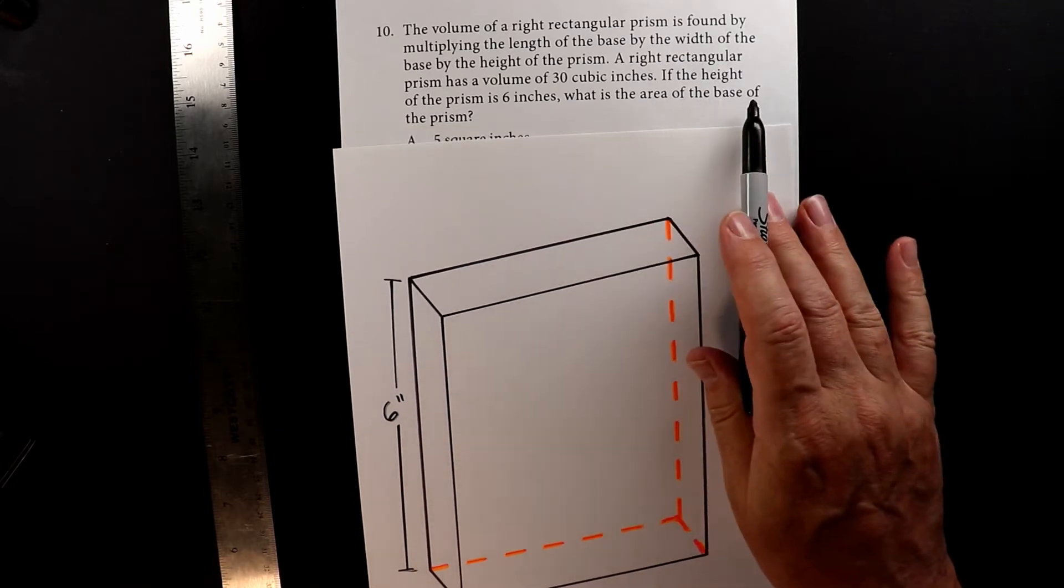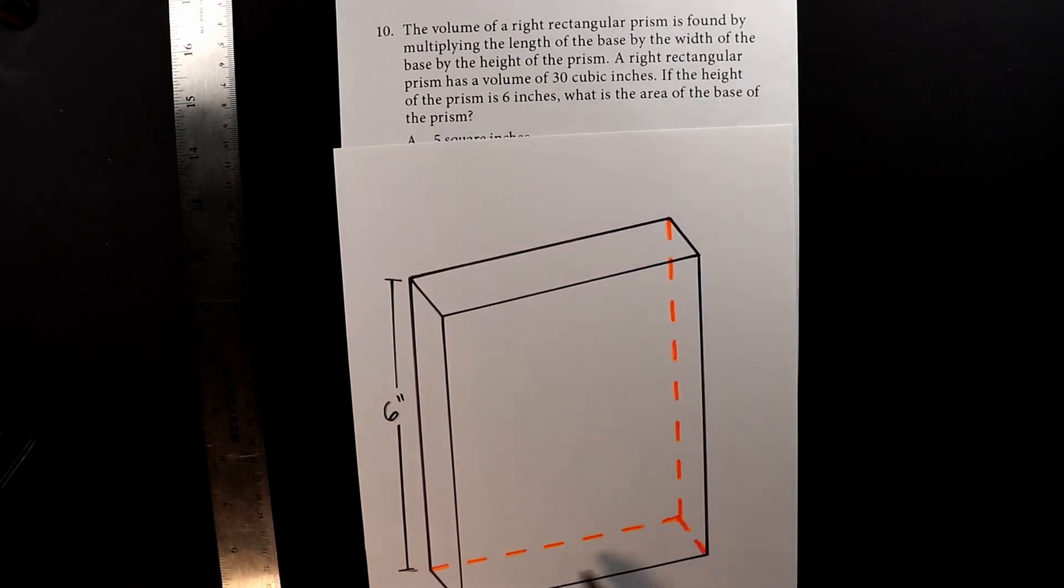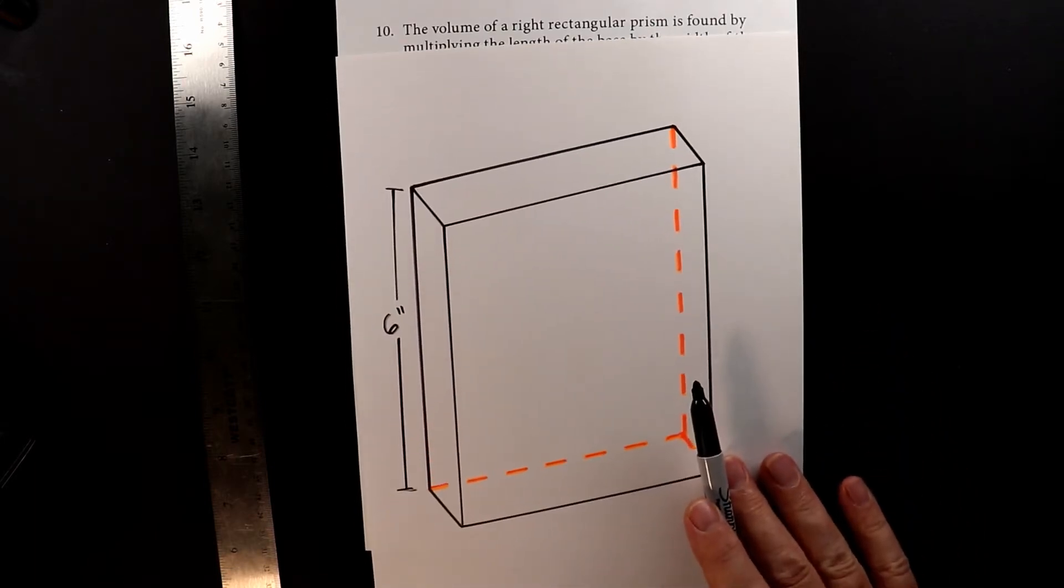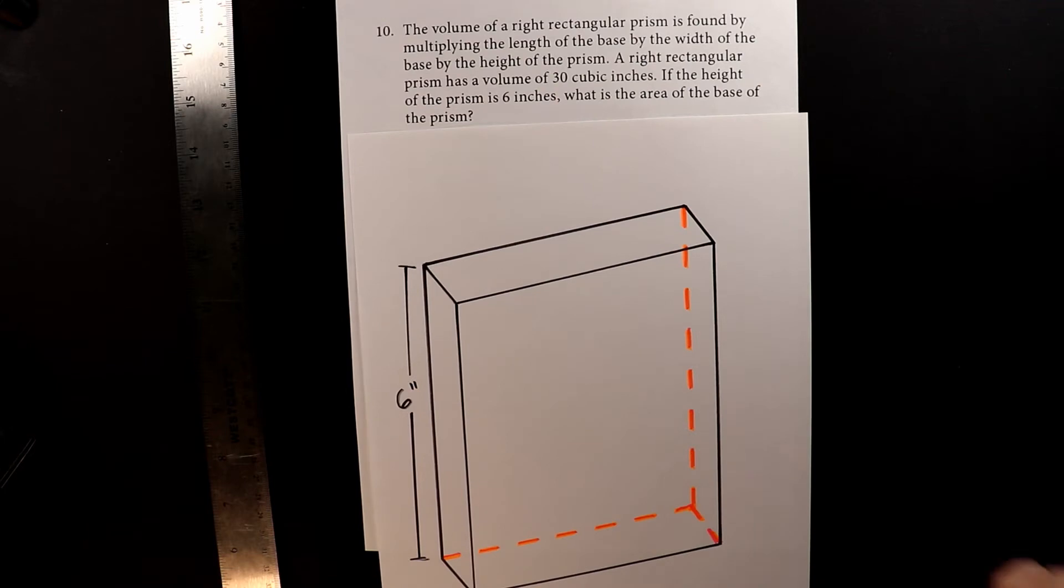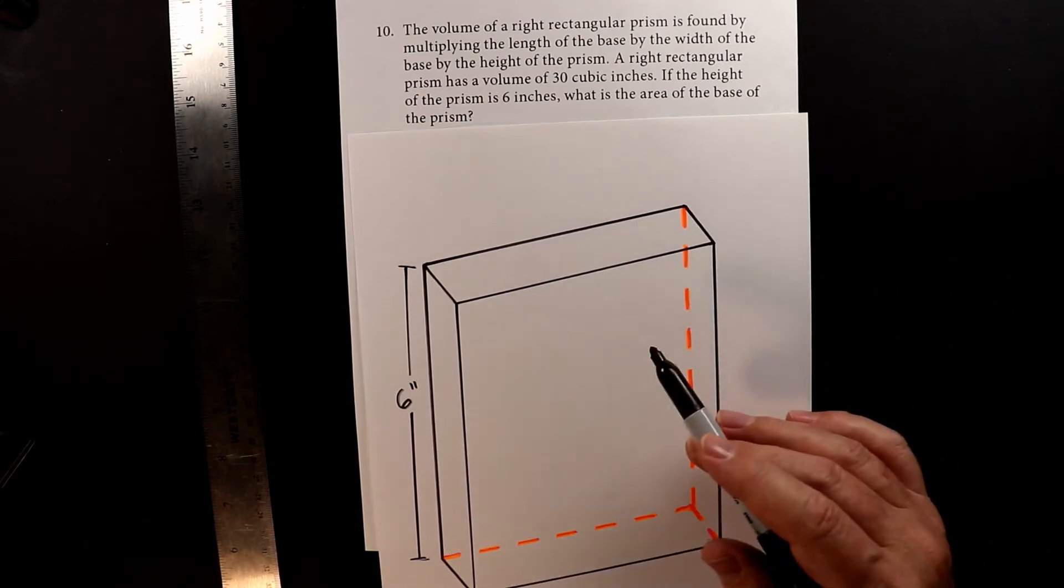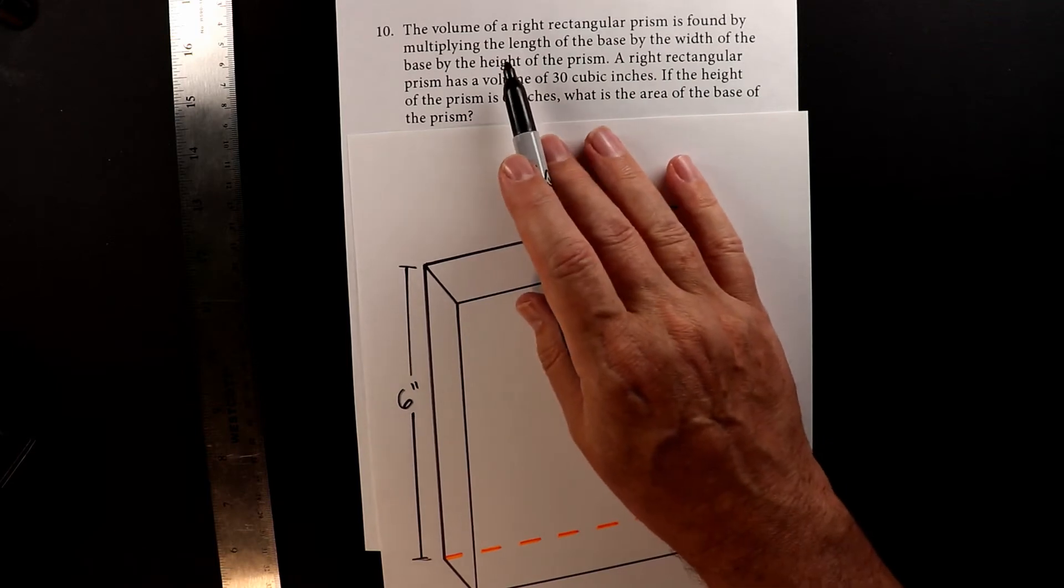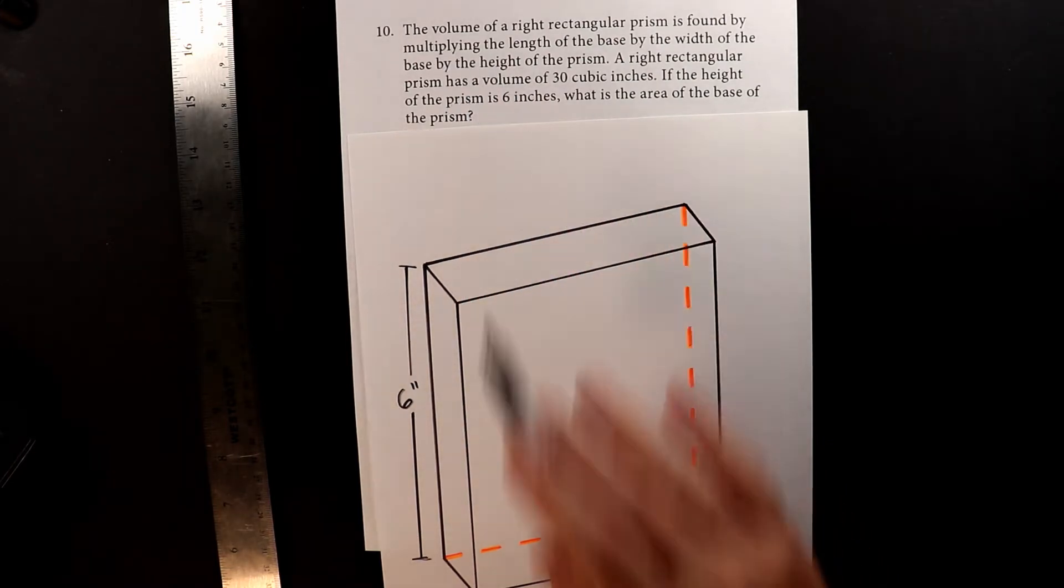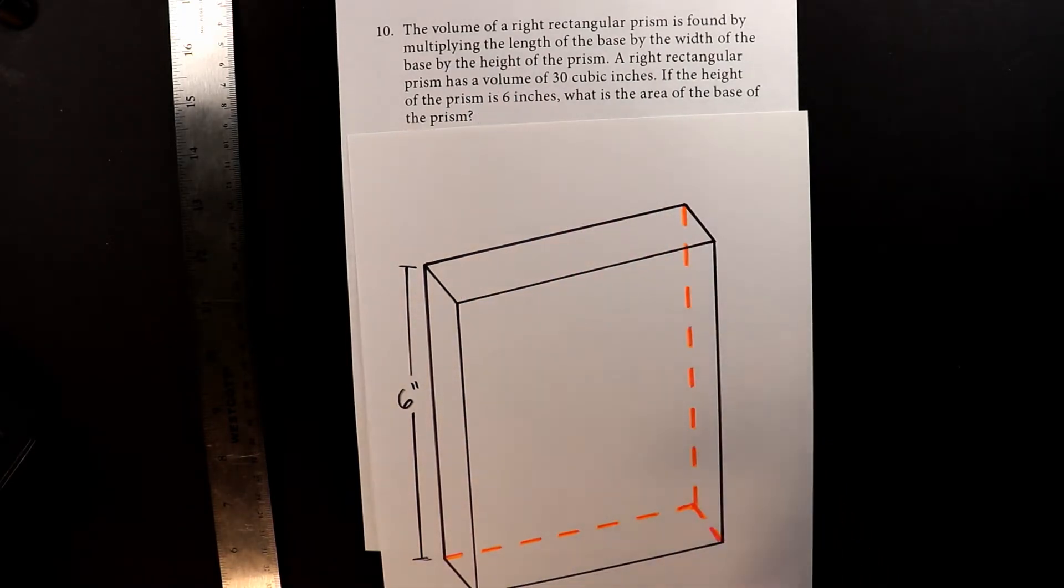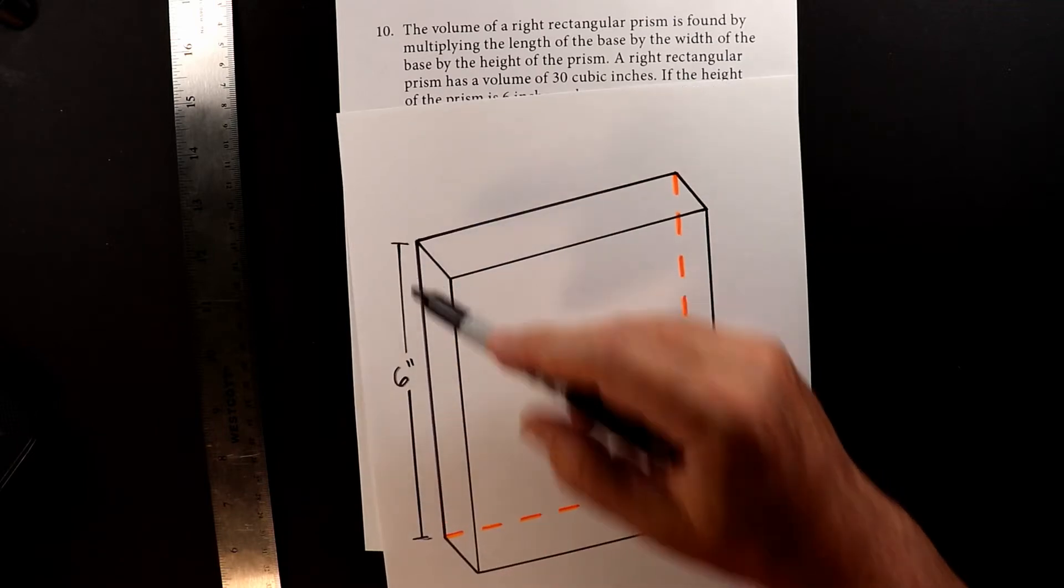What is the area of the base? The base is the bottom. So I use these dashed lines to show you that the prism is sort of like a crystal that you can see through. So let's do some review on how to find the volume. Now, they tell you how to do it. It's by multiplying the length of the base times the width times the height.